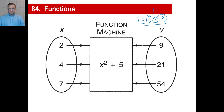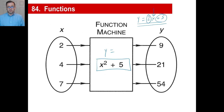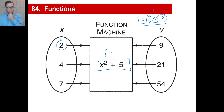A function machine: you stick something in and you get one answer out. If the function is F(x) = x² + 5, and 2 kids show up, then 2 squared is 4, plus $5 is $9. If 4 kids show up, 4 squared is 16 plus 5 is $21. If 7 kids show up, 7 squared is 49 plus 5 is $54.